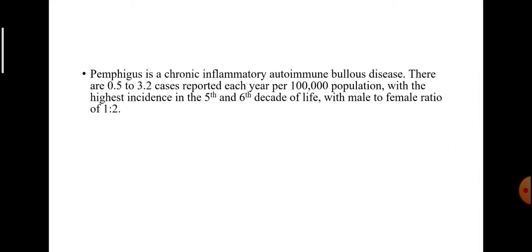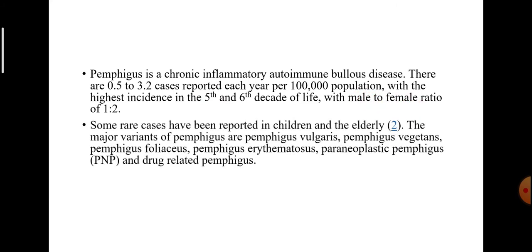Pemphigus is a chronic inflammatory autoimmune bullous disease. There are about 0.5 to 3.2 cases reported each year per 100,000 population, with the highest incidence in the 5th and 6th decade of life, with a male to female ratio of 1:2. Some rare cases have been reported in children and the elderly.